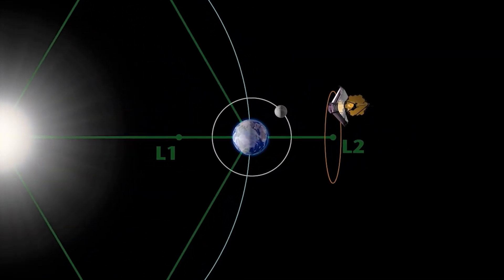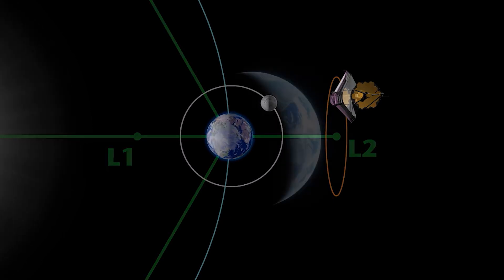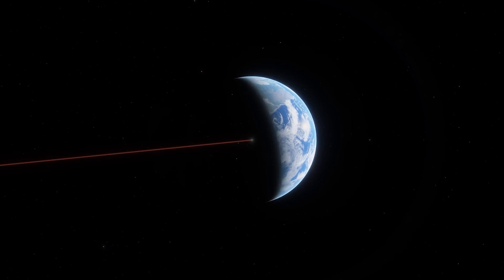JWST's orbit around the Earth aligns with the orbit of Proxima b, allowing full observations of its diurnal and nocturnal cycles in 11.2 Earth days.